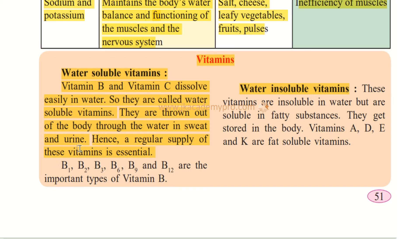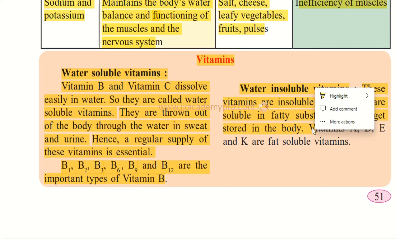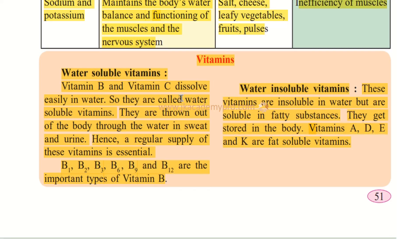There are different types of Vitamin B: B1, B2, B3, B6, B9, and B12 are the important types. The fat-soluble vitamins — Vitamin A, D, E, and K — are insoluble in water but soluble in fatty substances such as ghee and oils. These vitamins get stored in the body.